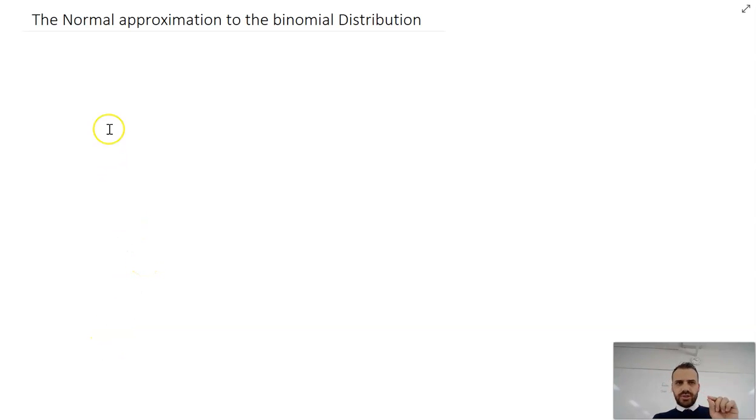We're going round and round in circles here because this time we're going to talk about the normal approximation to the binomial distribution.